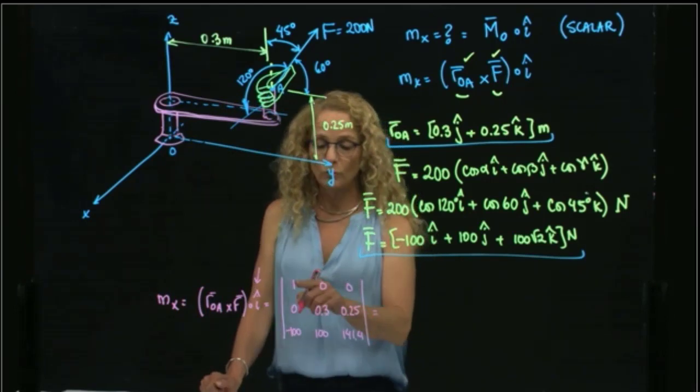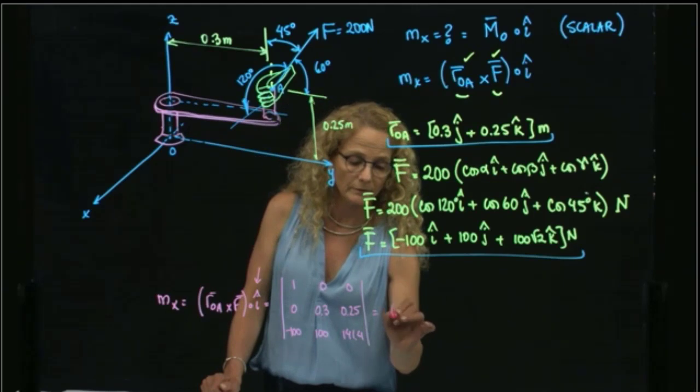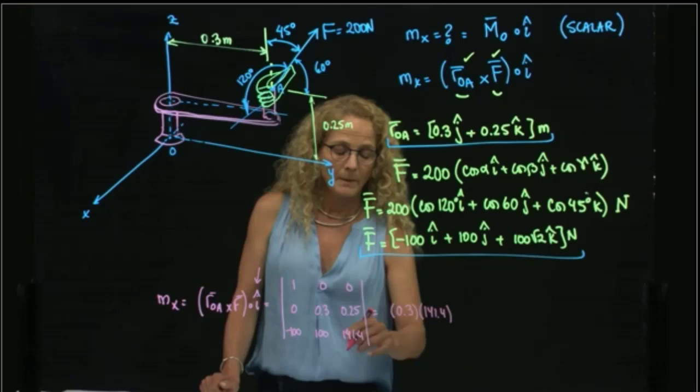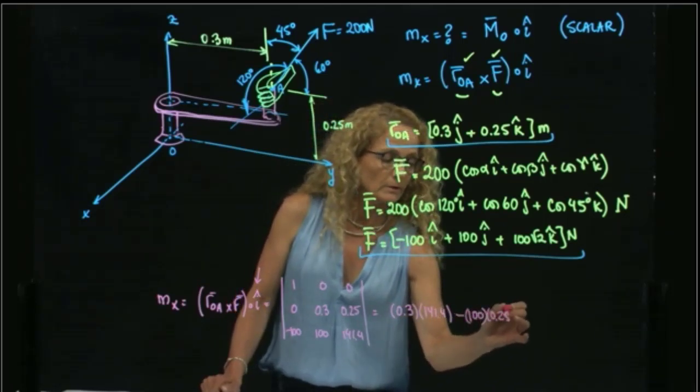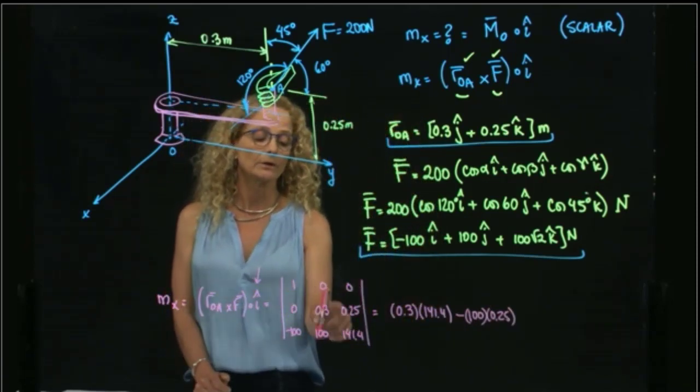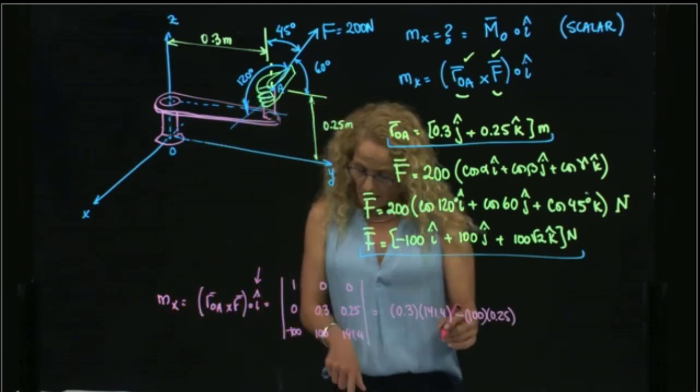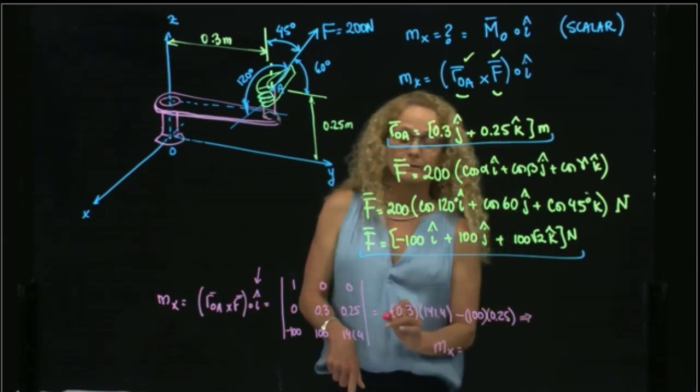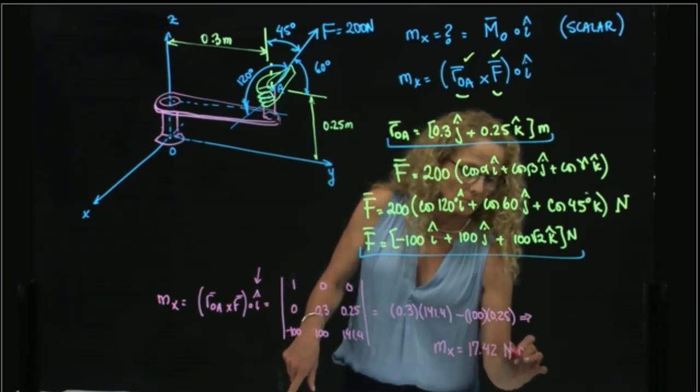And this will be equal to 1 times this little determinant, which will be then 0.3 times 141.4 minus 100 times 0.25. And I don't do the rest of the multiplications, because I'm getting a scalar. This is 0 times the rest of the determinant, 0. So this is the value that I get. And when I calculate that, I get that the moment with respect to axis x is equal to 17.42 newton meters.